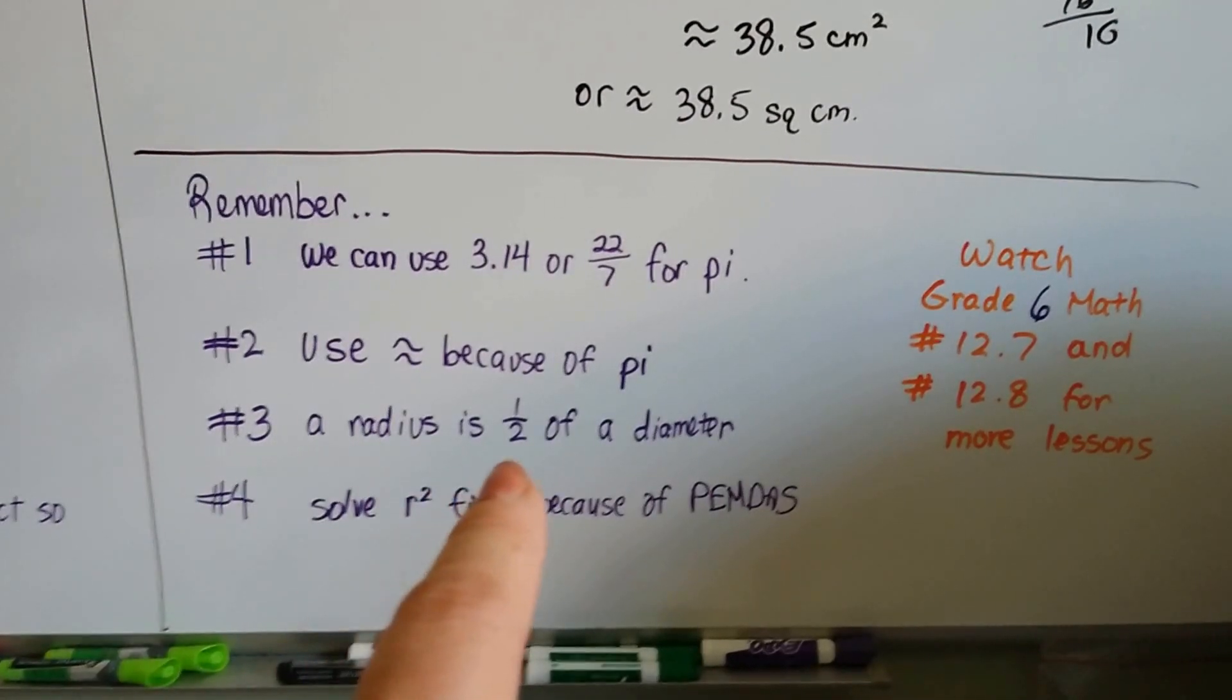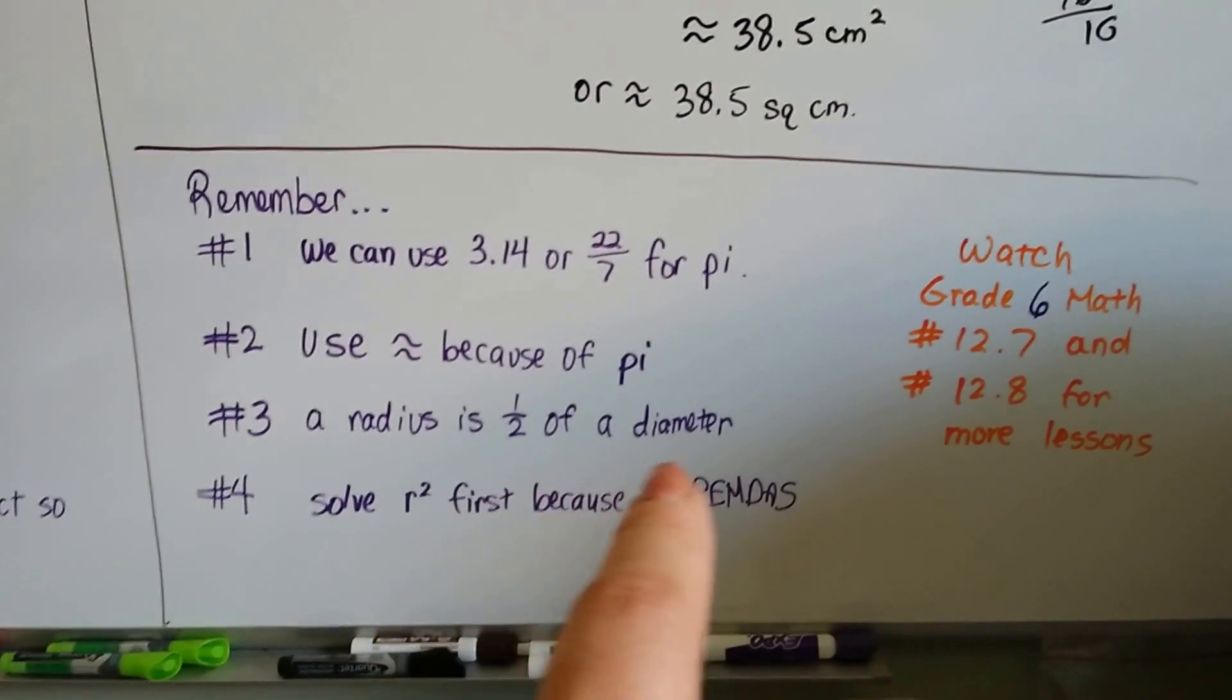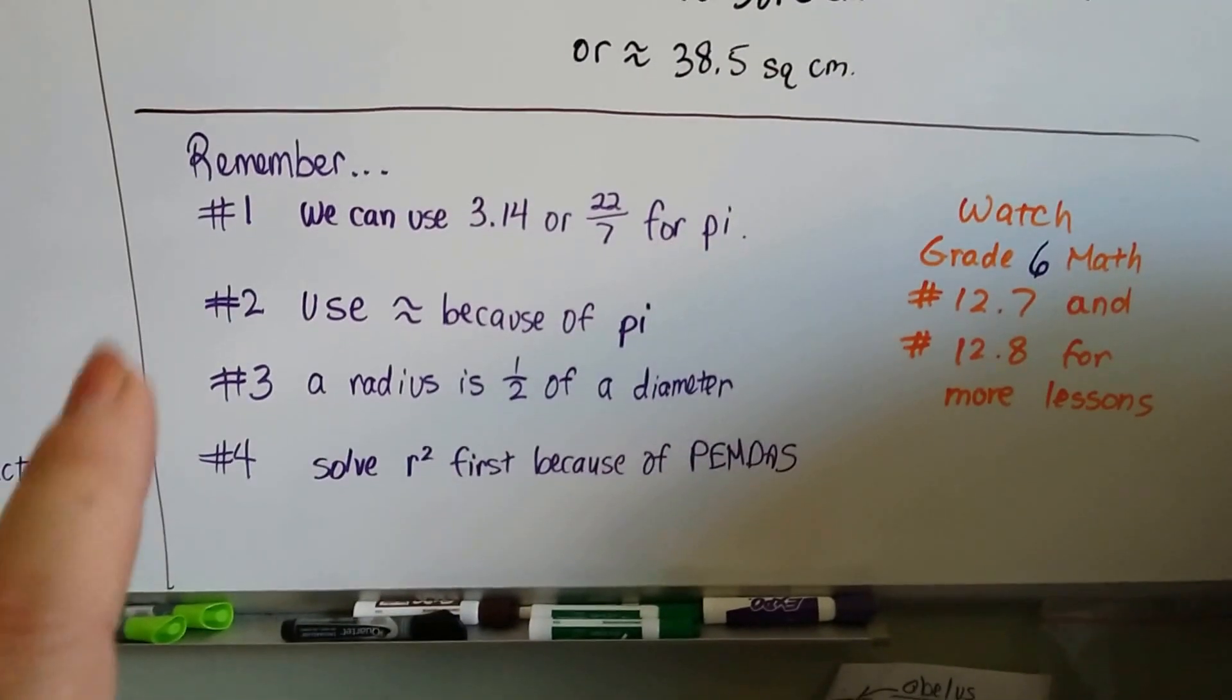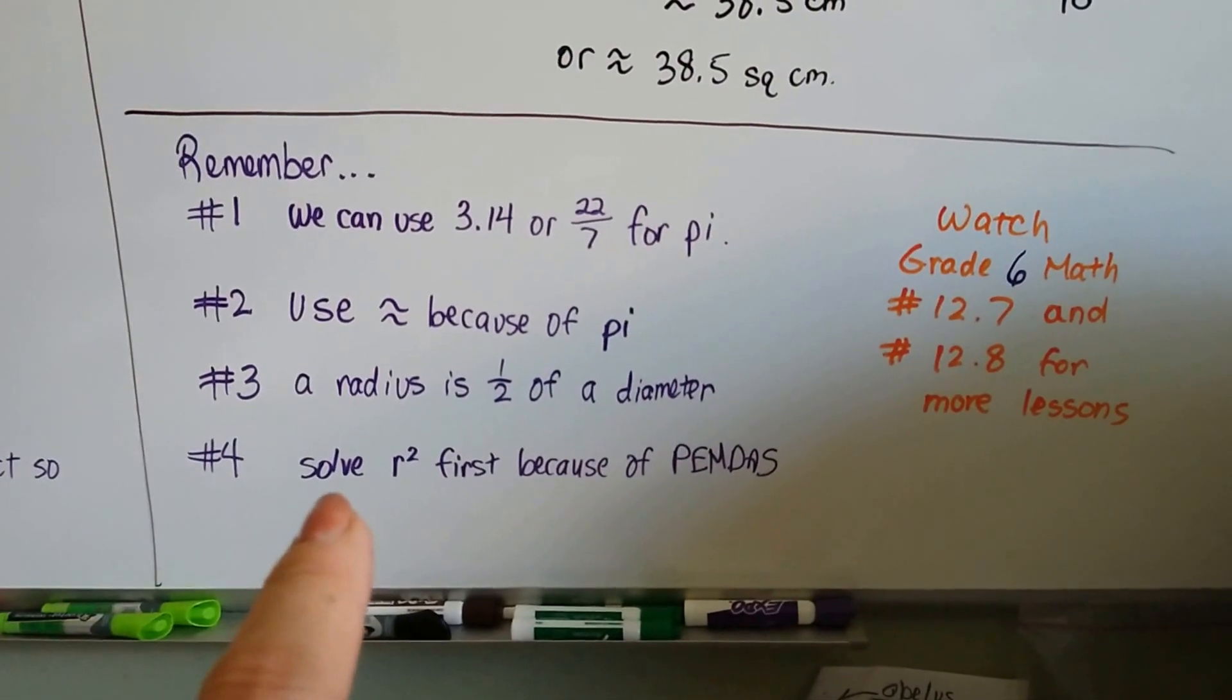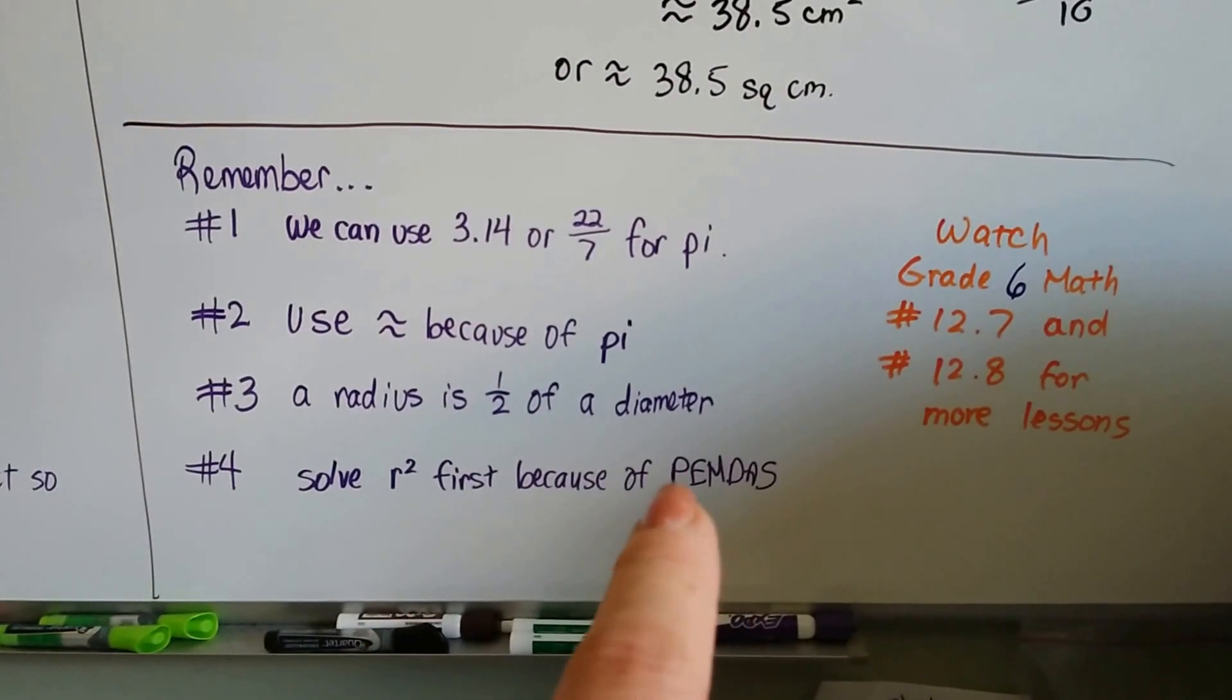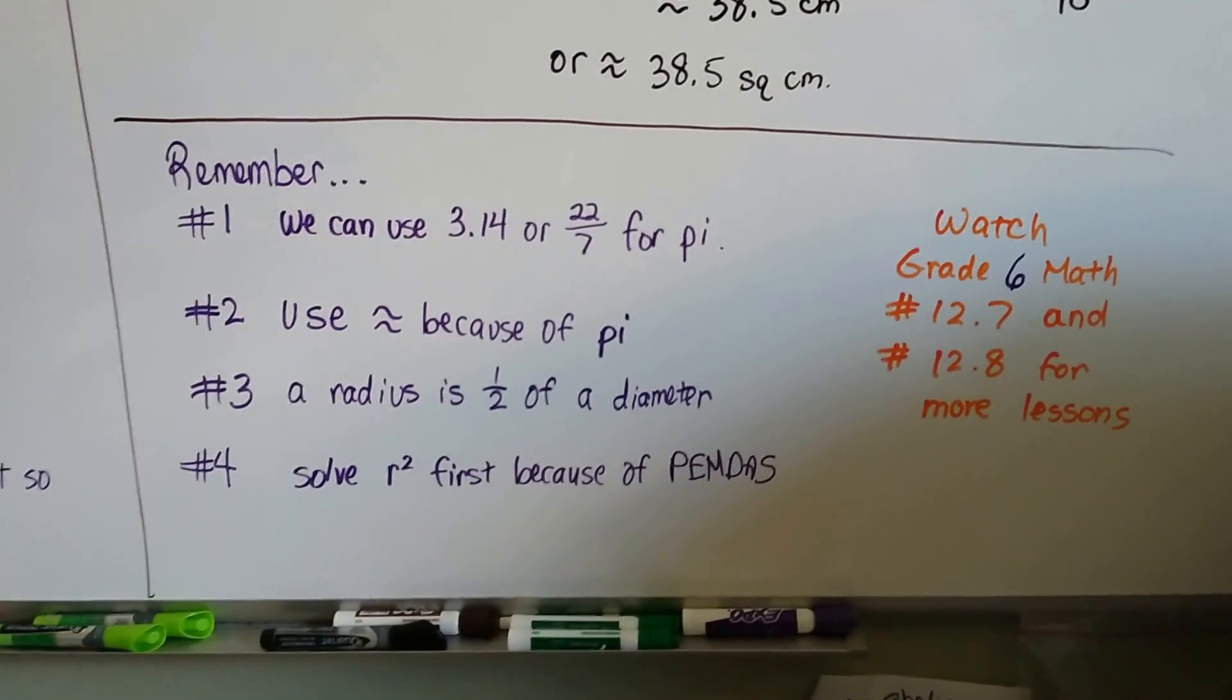Third thing, that a radius is half of the diameter. So if they give you the diameter in the problem, just cut it in half, you'll have the radius. And the last thing to remember is when we solve r squared first, it's because of the order of operations, the exponents, then multiply.